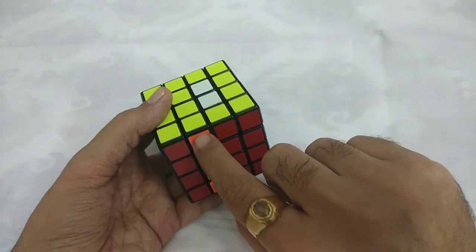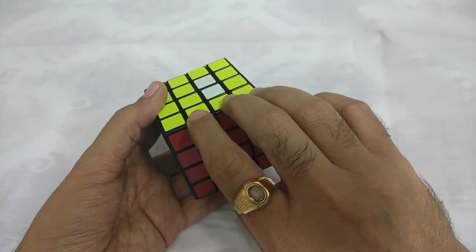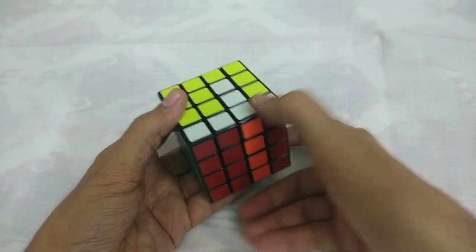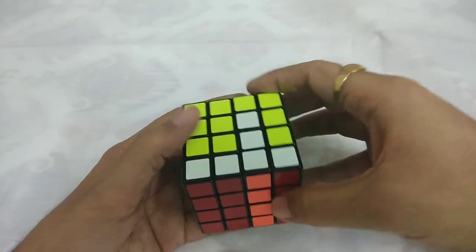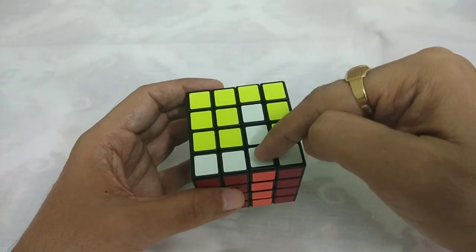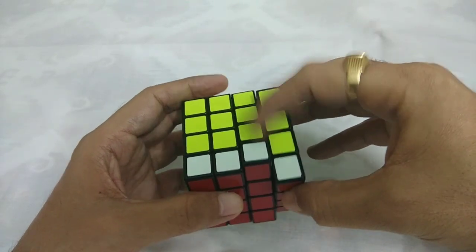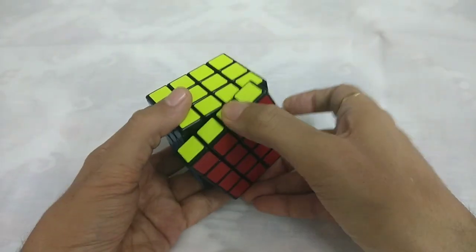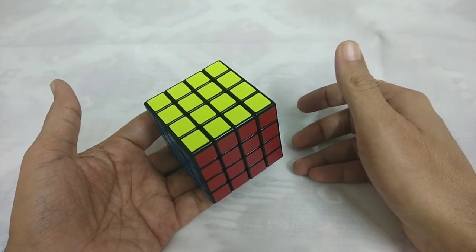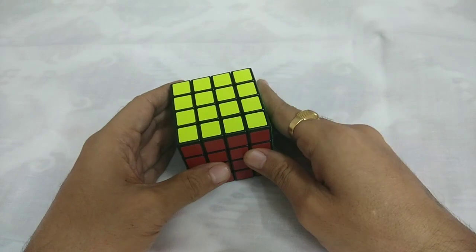So now we have to move this front layer twice. So 2F. Now we have to move this twice. So 1 and 2. And this is solved. So this is first method.